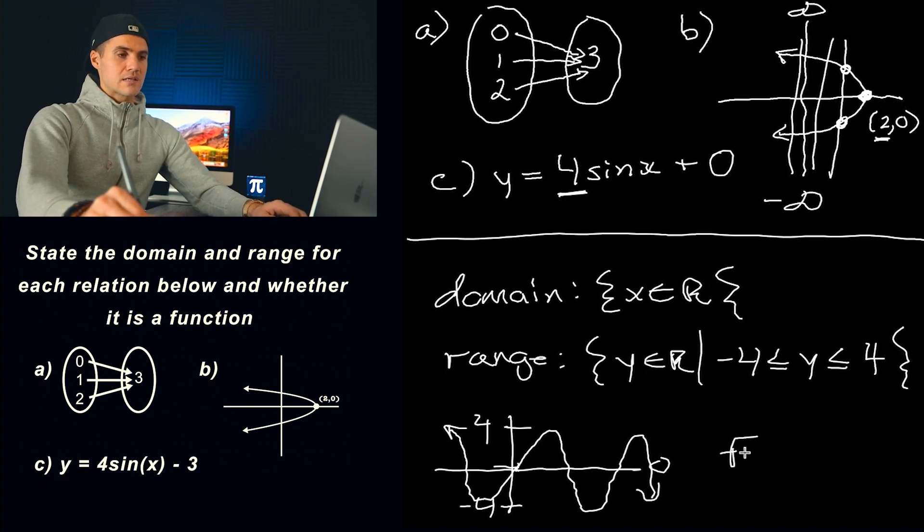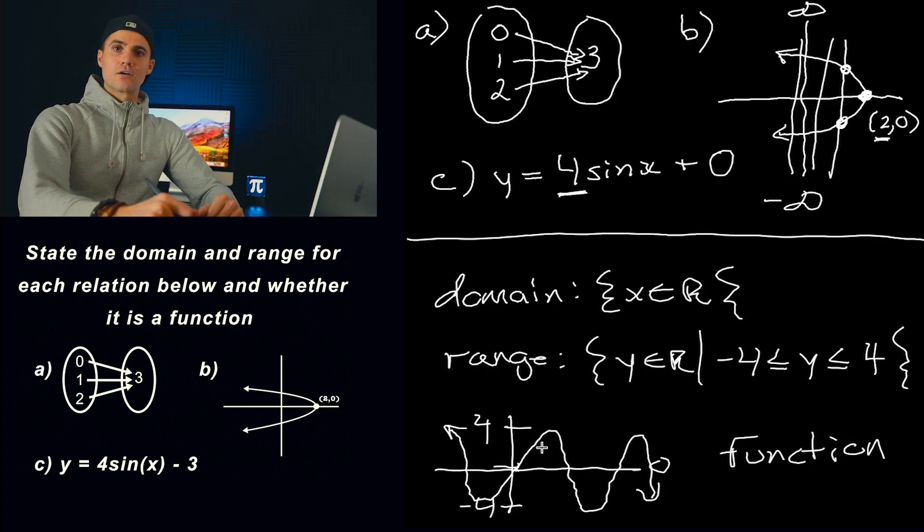The range for a sinusoidal function is always going to be between the minimum and maximum. And then is this a function? Yes, it is a function because it passes the vertical line test. At no point does it fail the vertical line test throughout its entire domain.